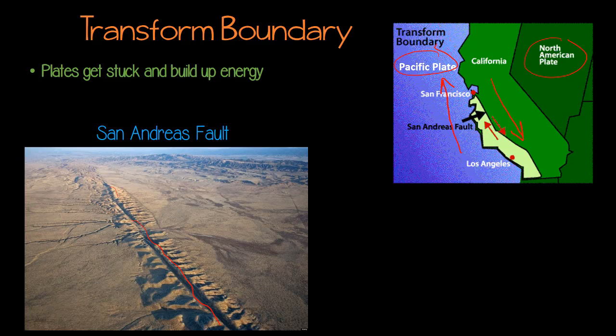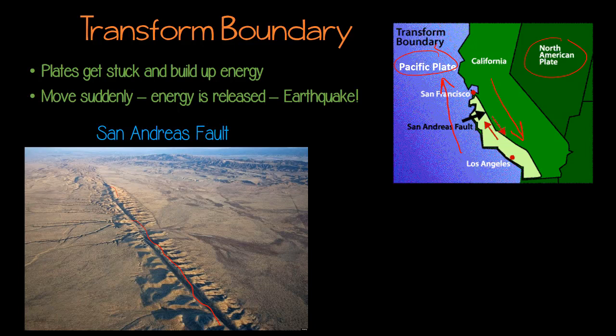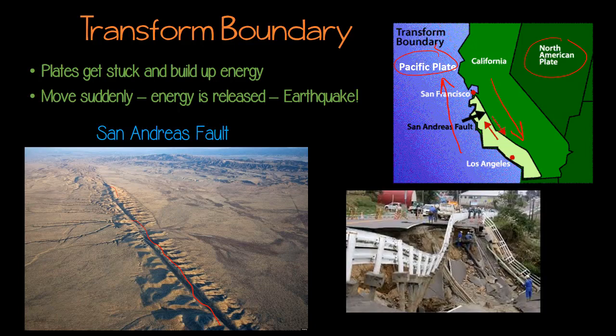Sometimes the plates get stuck, and while they're stuck they're not able to move, but they're still pushing. So the energy from that pushing just builds and builds. Then all of a sudden, those plates come unstuck and they slip, and they move in this fast, violent motion — and that causes earthquakes. The San Andreas Fault, which is the result of a transform boundary, is the reason California is famous for having so many earthquakes.